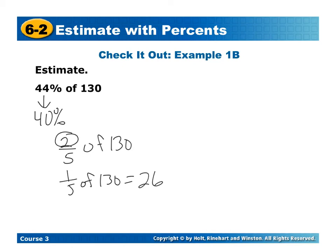But since we have 2, so I'm going to take the 26 times 2, which is going to give me 52. So 44% of 130 is about 52.